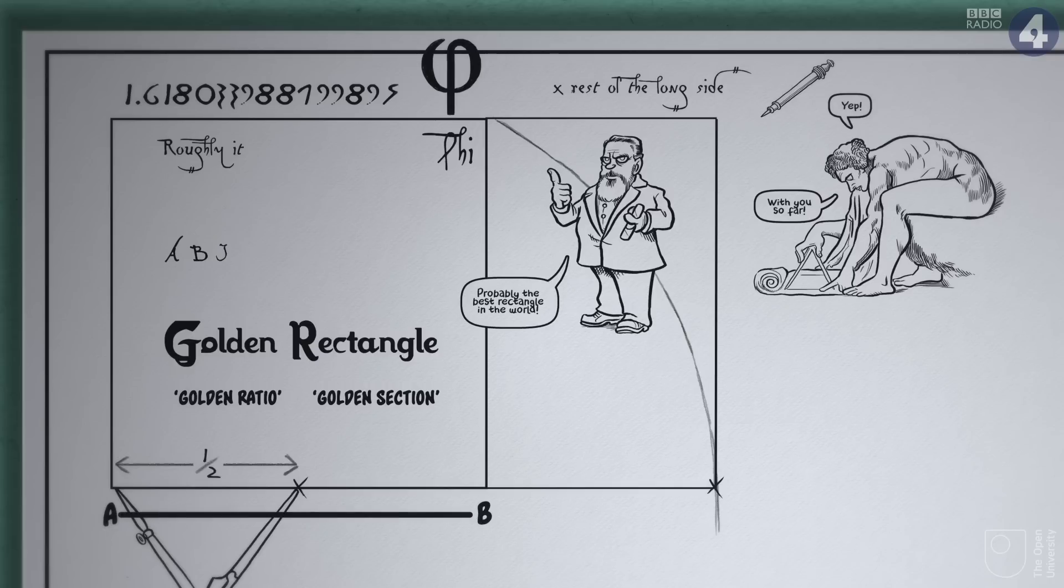For instance, we've seen that A to B is approximately 1.6180339887 times as long as B to C. But what you might not have realized is that A to C is approximately 1.61, you get the point, times as long as A to B.